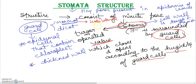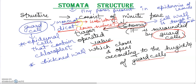Monocots have isobilateral leaves, which means that stomata in monocots are equally distributed on both surfaces. In dicots, stomata are more concentrated on the lower surface, whereas in monocots they are equally distributed on both surfaces.